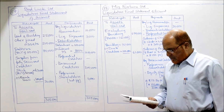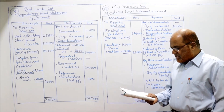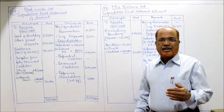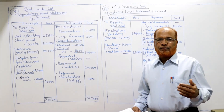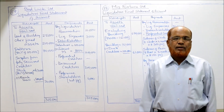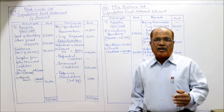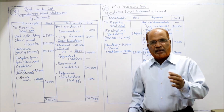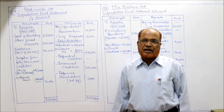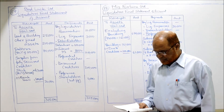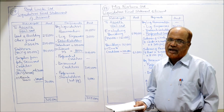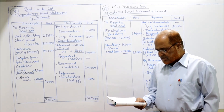Bank loan was secured by pledging stock, meaning stock should not be taken on the asset side here because stock has been handed over to the bank. The bank will sell the stock, realize the money, take their bank loan amount, and the remaining amount will be returned back to the liquidator. Debentures and interest are secured by a floating charge on all assets.